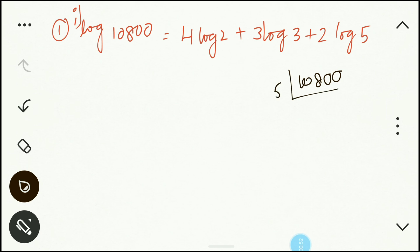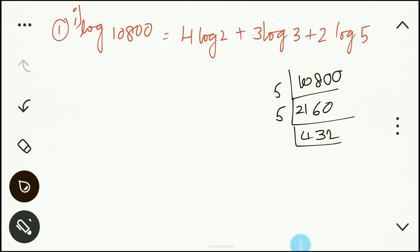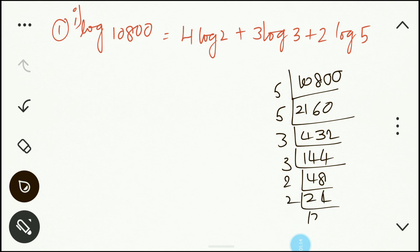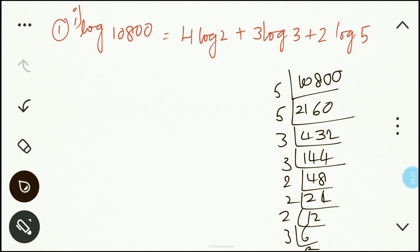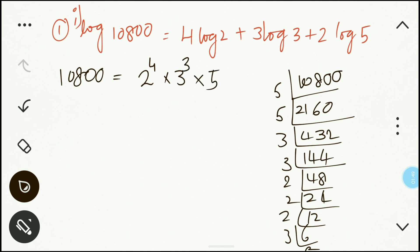Taking the LCM: divide by 5 to get 2160, then by 5 again to get 432, then by 3 to get 144, by 3 again to get 48, by 2 to get 24, by 2 to get 12, by 2 to get 6, and by 3 to get 2. So the prime factorization of 10800 is 2⁴ × 3³ × 5². There are four 2s, three 3s, and two 5s.